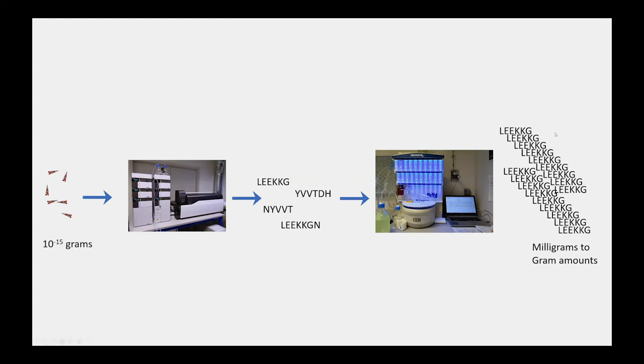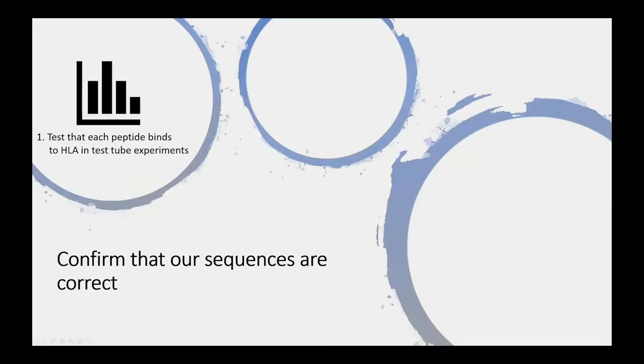And first, we want to ensure that the peptides that we've sequenced actually do indeed work. So we do test tube experiments again to verify that the peptide will bind to HLA in a specific kind of test tube experiment called a binding experiment.